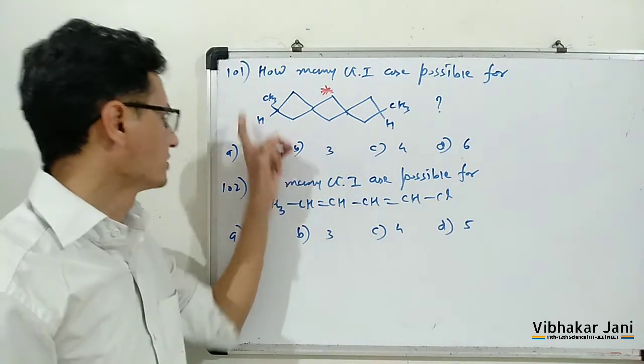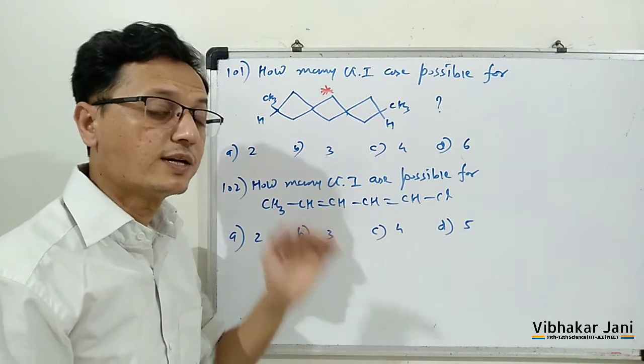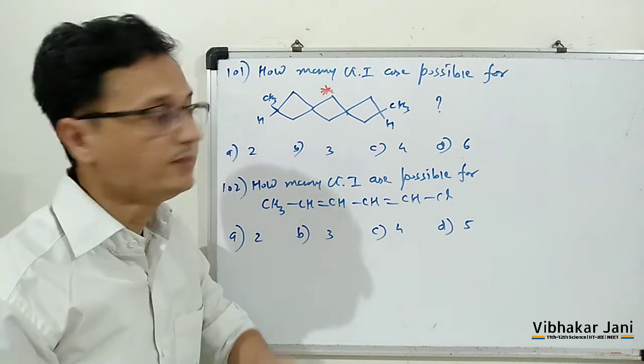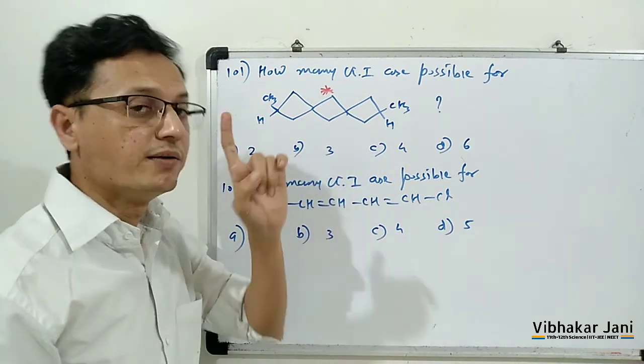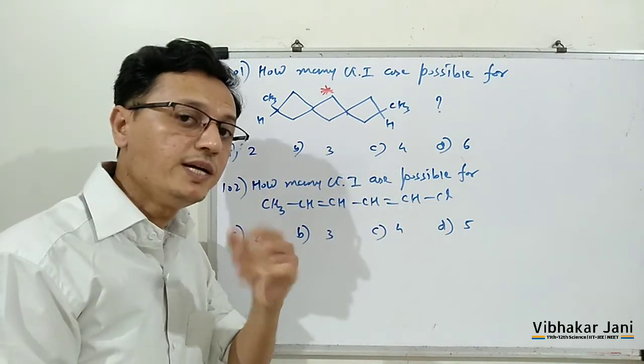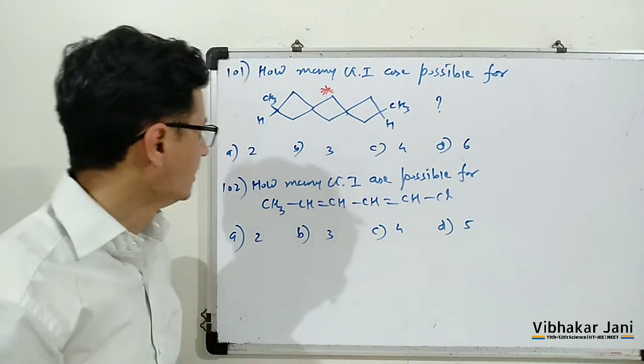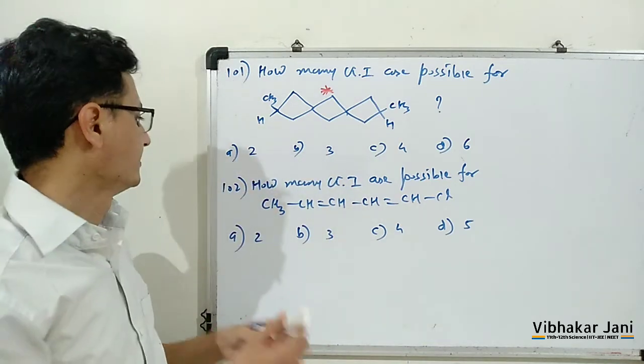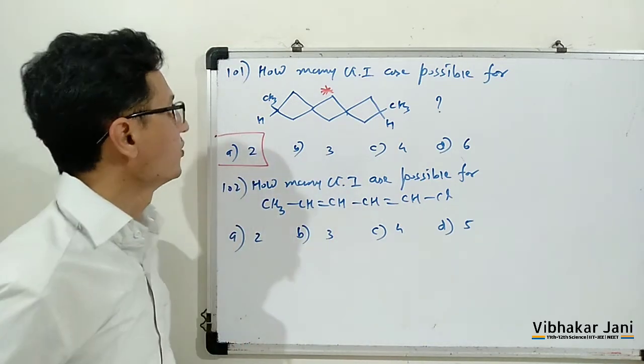There is one stereocenter, so the total number of geometrical isomers for this compound will be 2: cis and trans. So our answer will be b, 2 is the correct answer for this question.